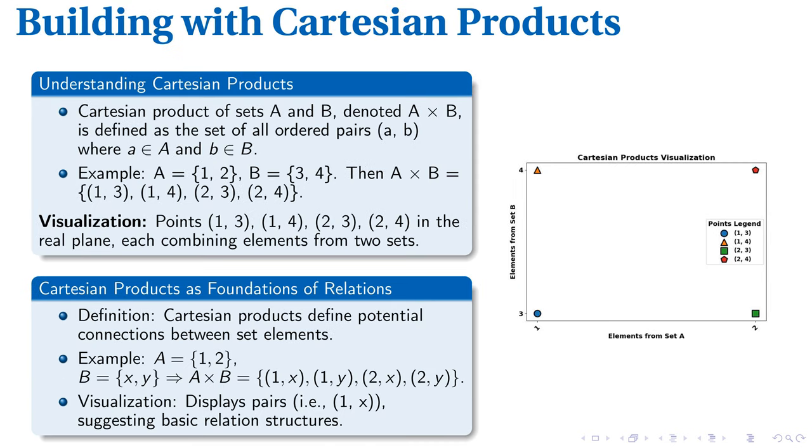The key to understanding relations involves mastering Cartesian products. Intriguingly, these constructs are a method of combining different sets of elements. For instance, given two sets, A and B.